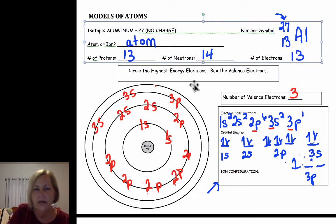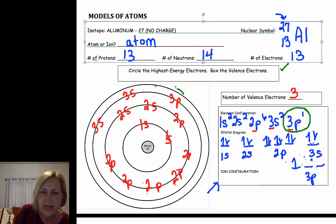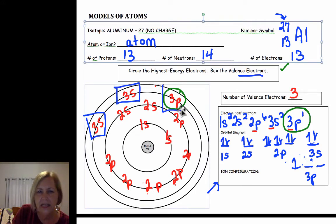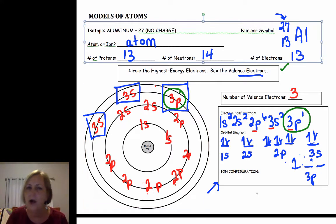If I'm asked to circle the highest energy electrons, that's the last we were filling, so that's our 3p electrons. Then it asks us to put a box around our valence electrons, those are our highest energy s and p electrons. There's an overlap not always, but in this case there's an overlap between that high energy electron and the valence electrons.